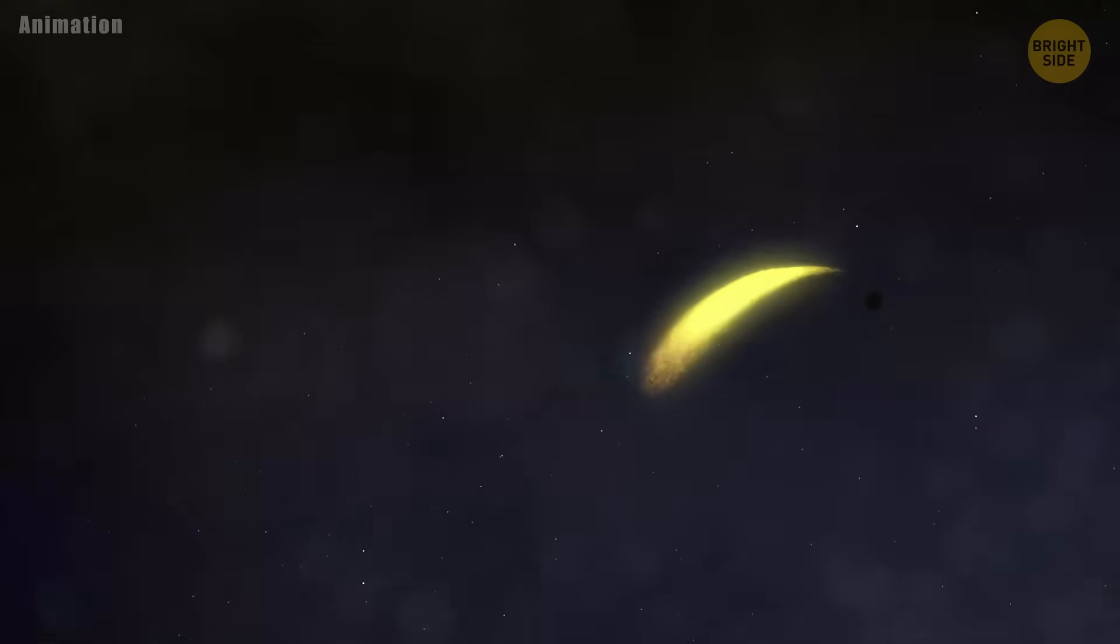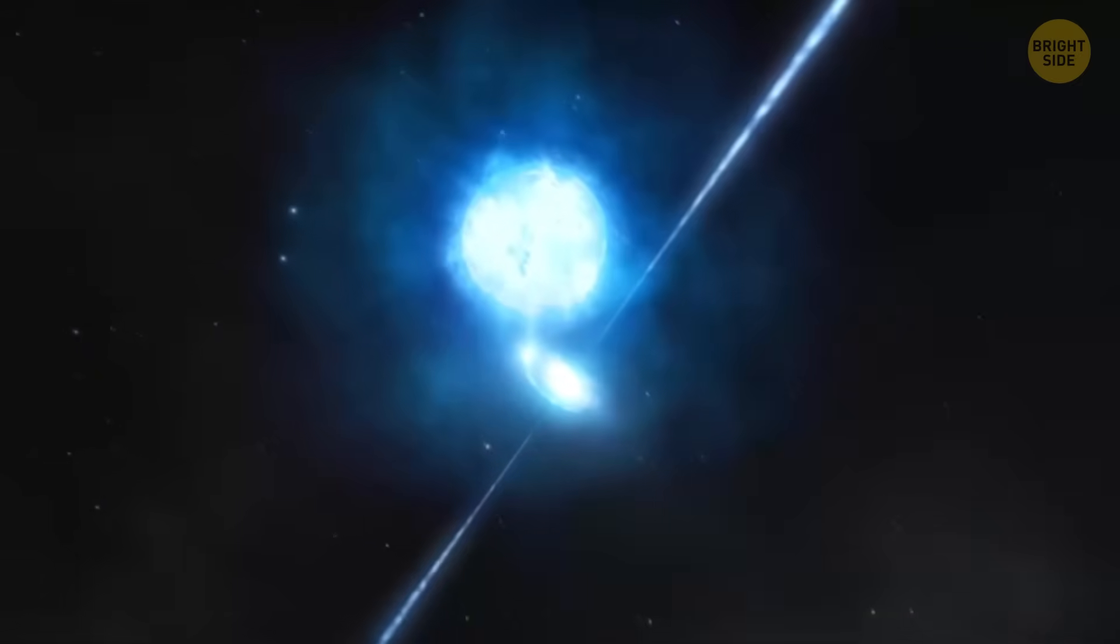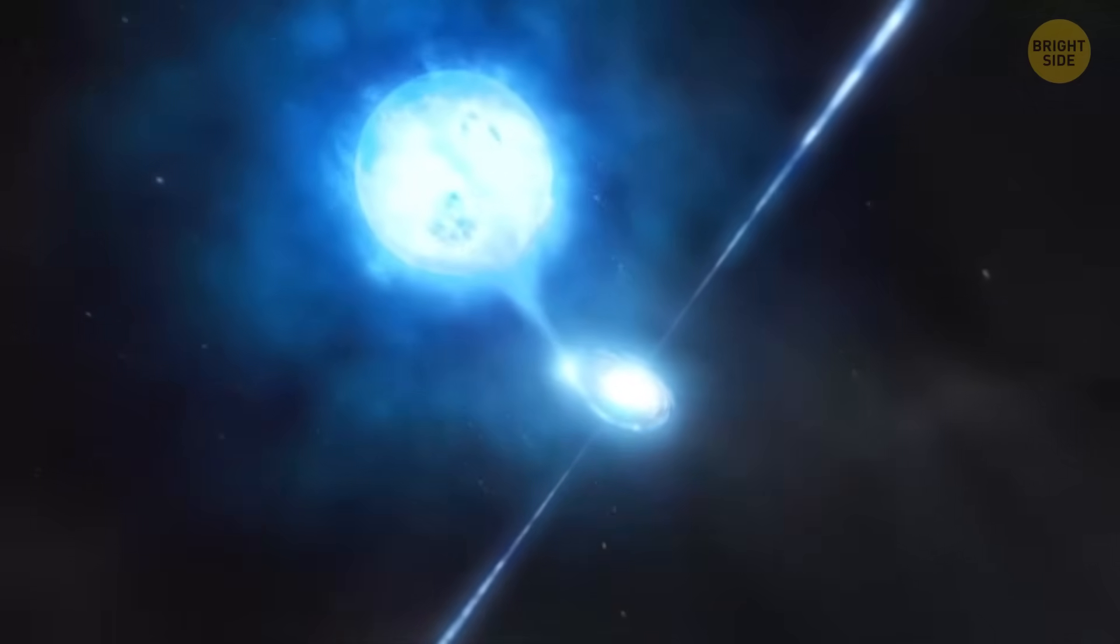Most of the stellar-mass black holes we've spotted are the clingy type paired up with stars. Some suck gas from their partner stars and light up in X-rays. We call those X-ray binaries.